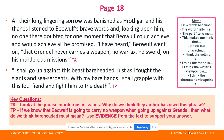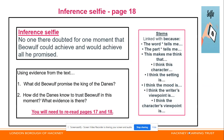Use evidence from the text to support your answers and please make sure that you are using the sentence stems. Today your inference task is: 'No one there doubted for a moment that Beowulf could achieve and would achieve all he promised.' Using evidence from the text, what did Beowulf promise the king of the Danes? Number 2: How did the Danes know to trust Beowulf in this moment? What evidence is there? You will need to re-read pages 17 and 18.